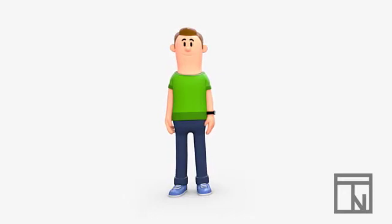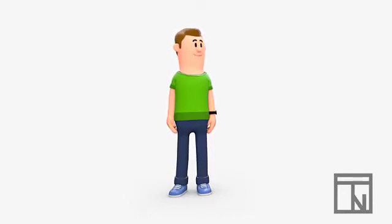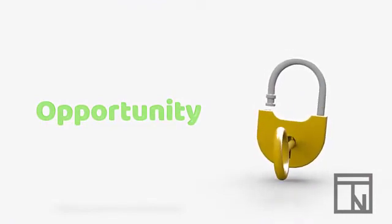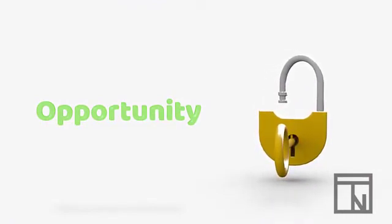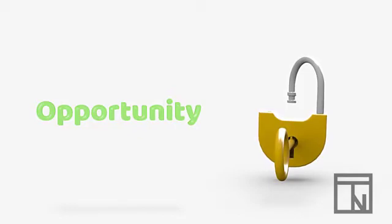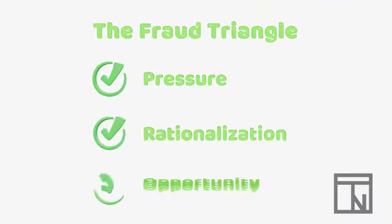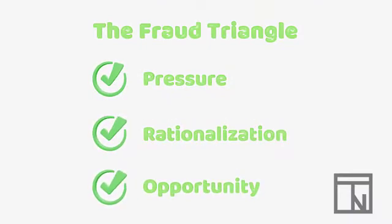If a person never convinces themselves that it's okay, then they won't do it. Opportunity says that even if a person feels pressure to commit fraud and has convinced themselves that it's okay, they still won't do it unless there is a way provided for them to commit the crime. Each of these three pieces of the fraud triangle are essential to the creation of a fraud crime, and each of them must all be present at the same time in order for a fraud to be committed. If even one ingredient is missing, it will be impossible for a fraud to occur.